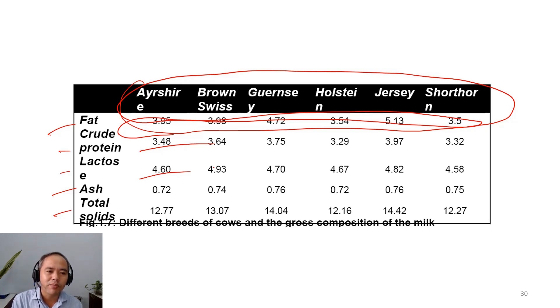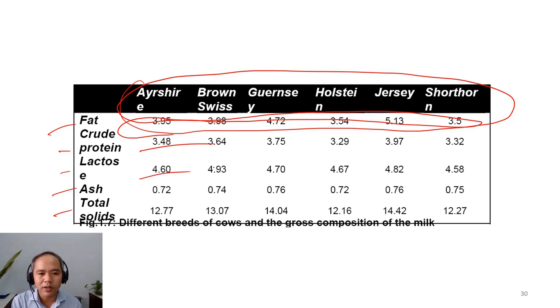The difference between breeds such as Ayrshire and Brown Swiss is actually smaller than the difference in milk composition between cow milk and buffalo milk. So the difference between breeds is smaller than the difference between species.